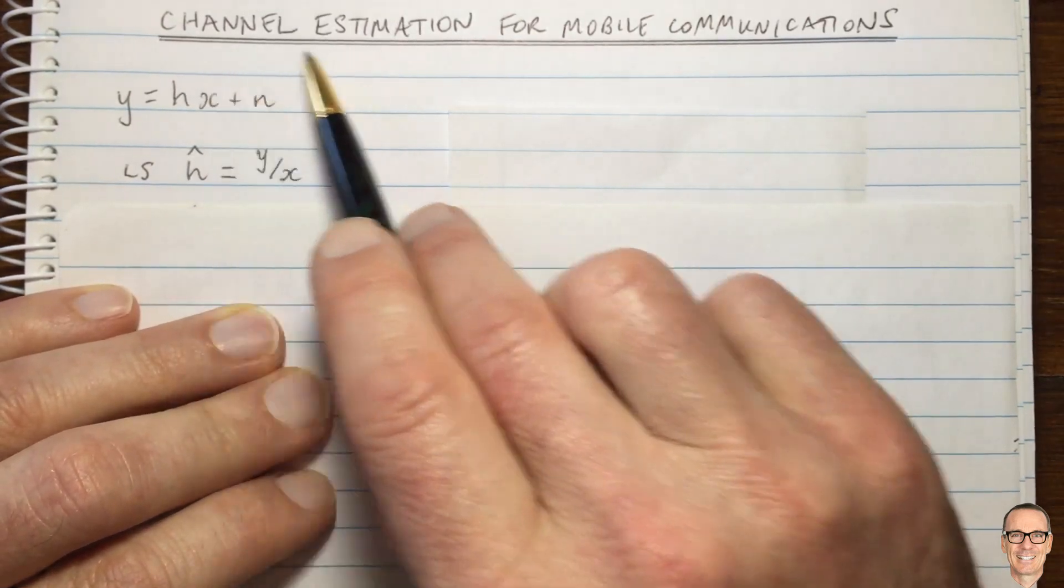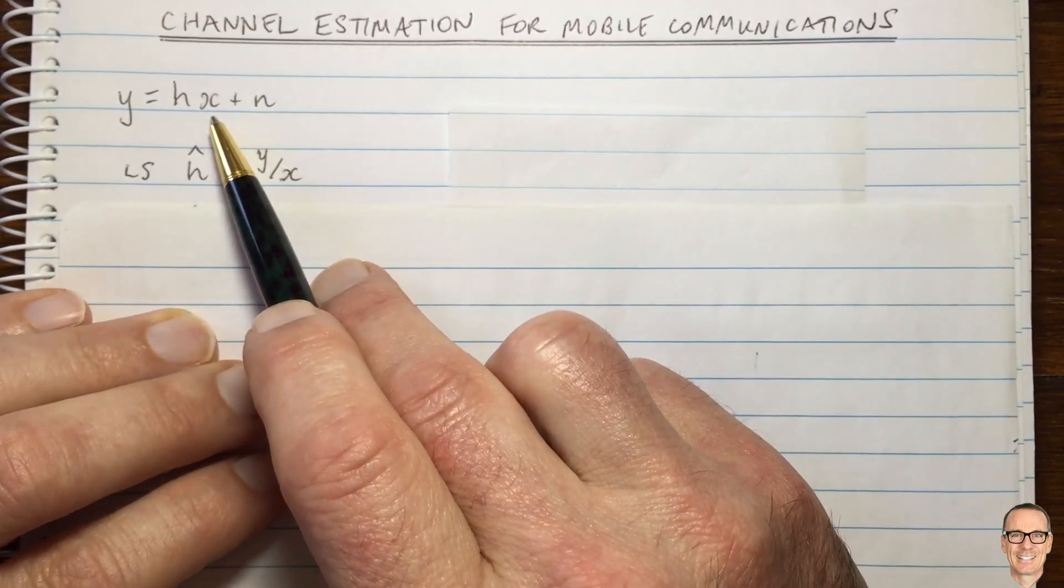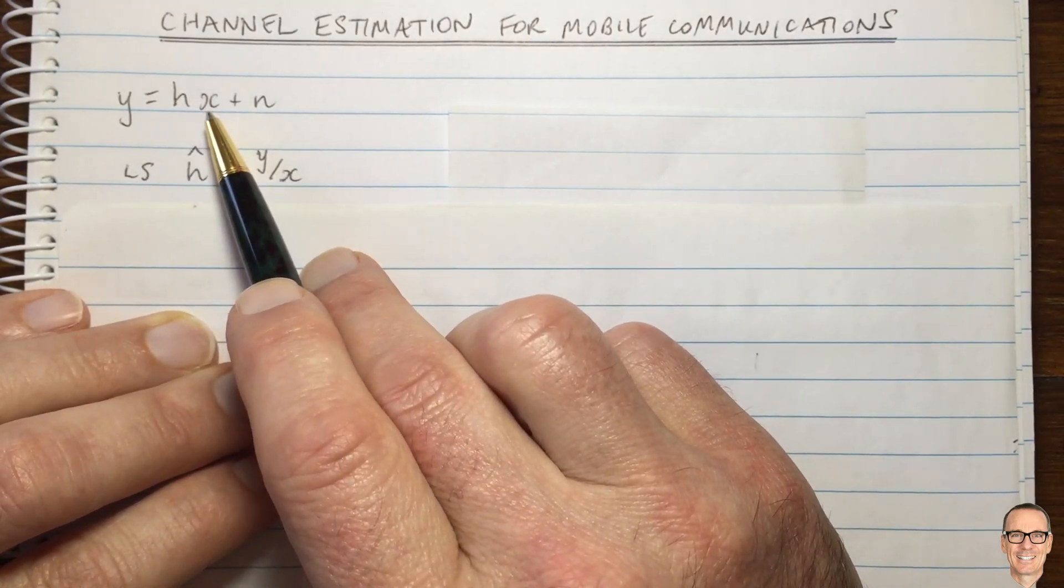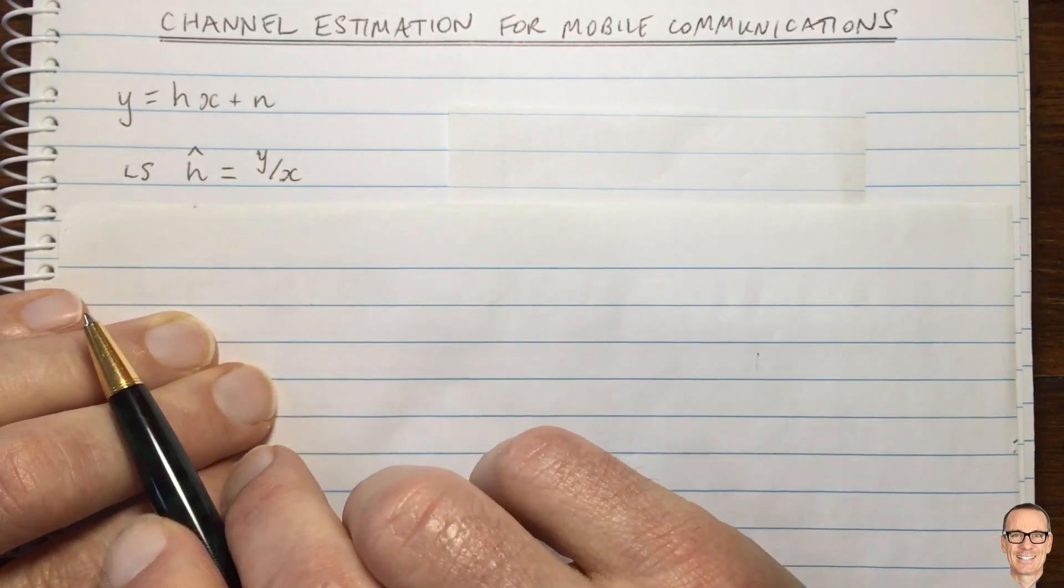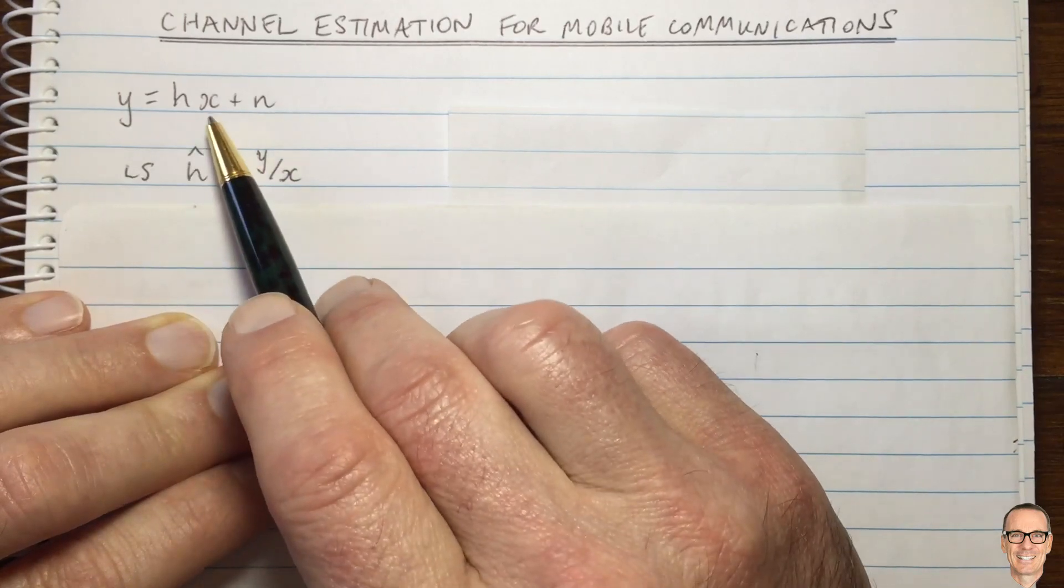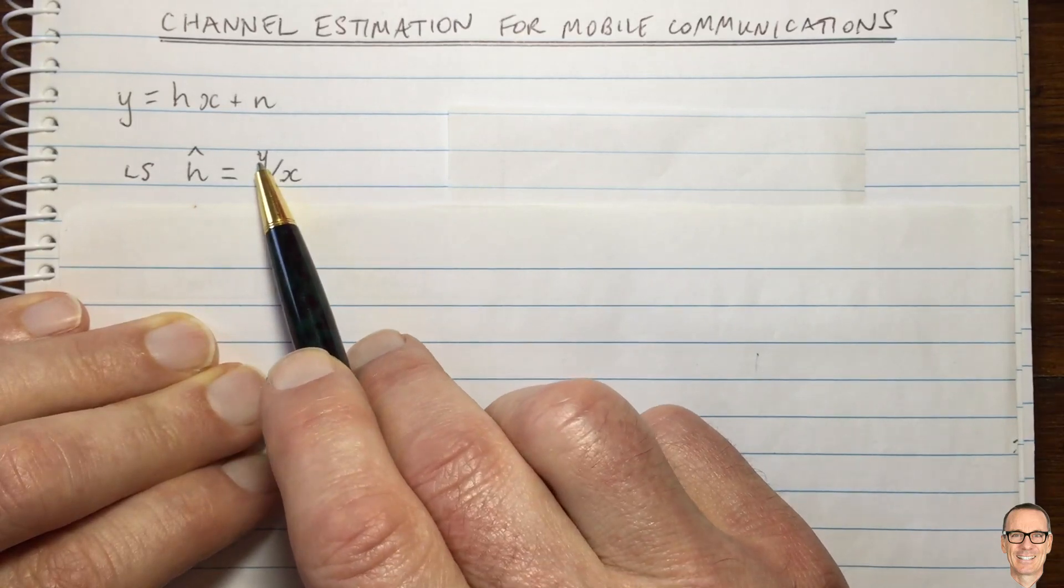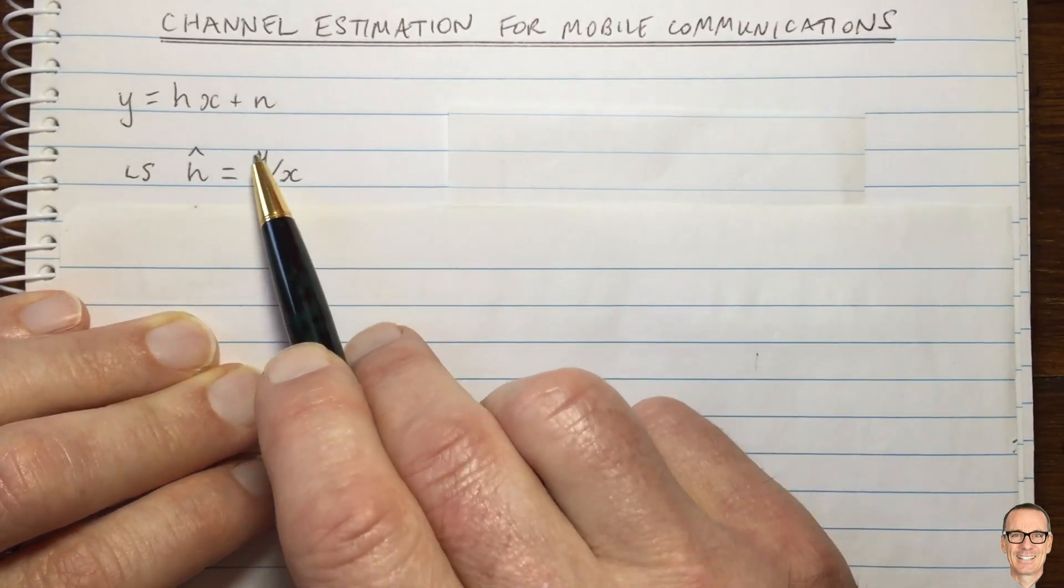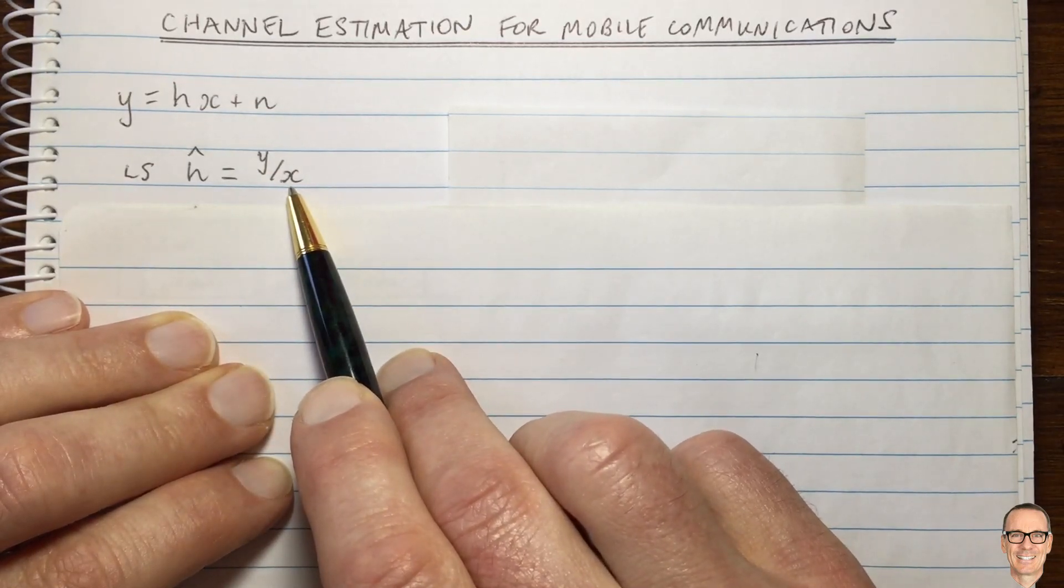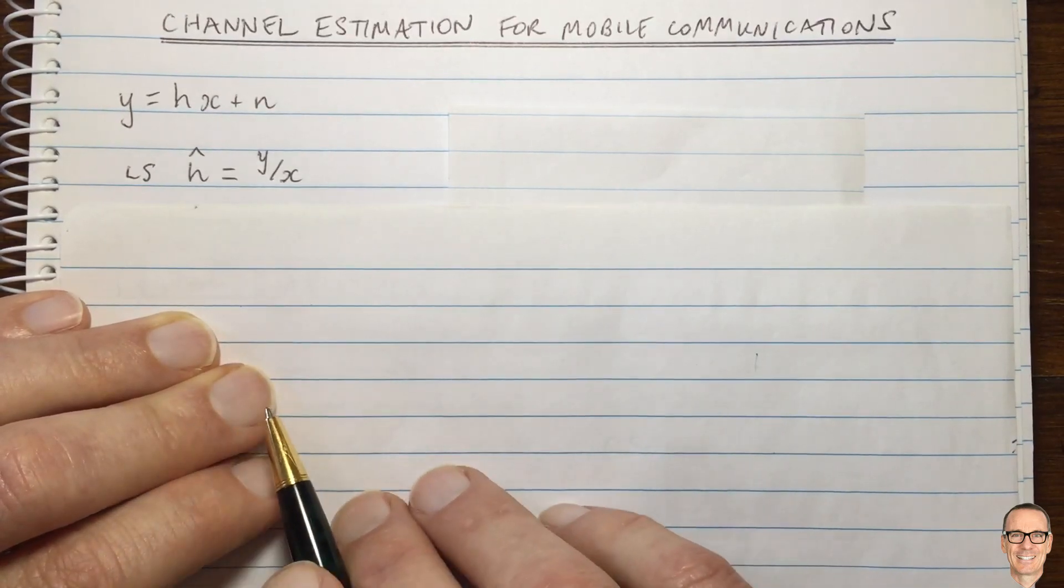What we do to estimate the channel is we send training data that the receiver already knows about. It expects that data so it knows what the symbol is and you just got to estimate the channel. In this simple case where it's a scalar single symbol being sent, the least squares estimate of the channel is given by Y divided by X. The receiver knows what the training data is so it knows X, and this gives you an estimate of H.